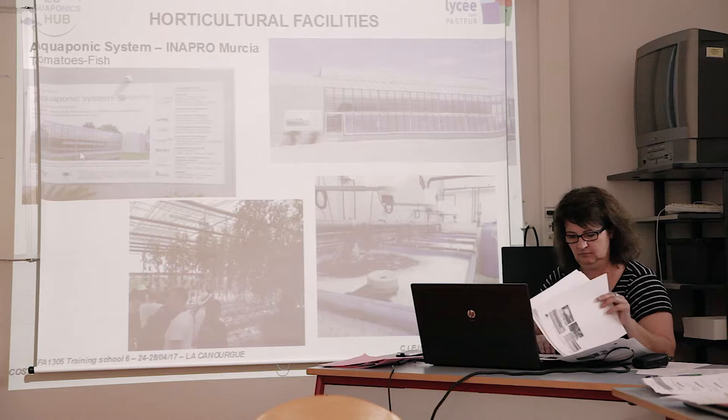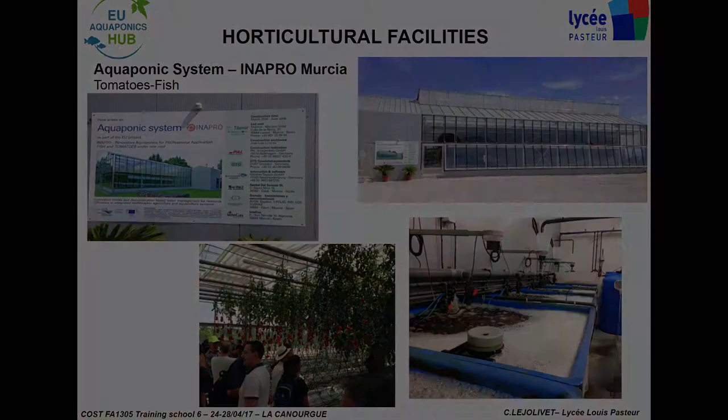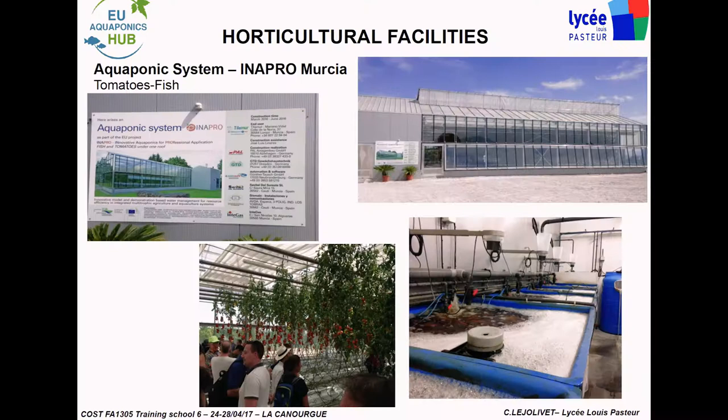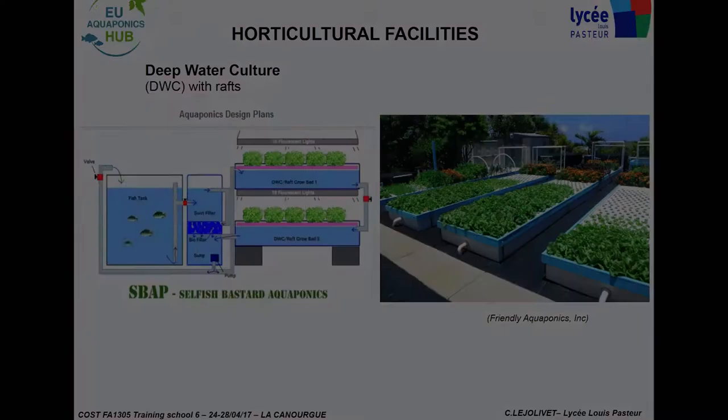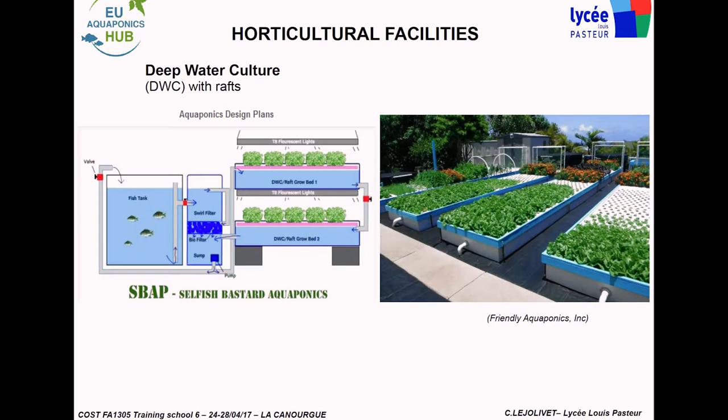Just have a look at an aquaponics project with a greenhouse — they use only bags and an NFT system for tomatoes as well. It's a decoupled system. You can see the quality of the tomatoes, but it's not very good. So, deep water culture — with rafts — uses long tanks with a constant flow rate or not.